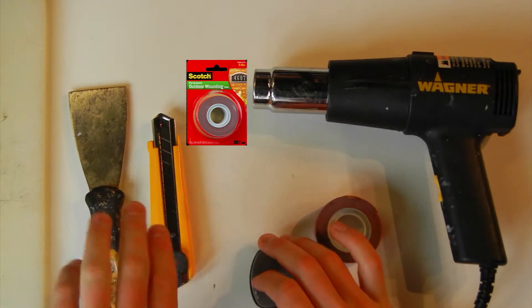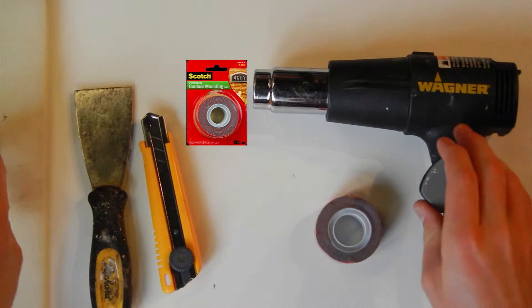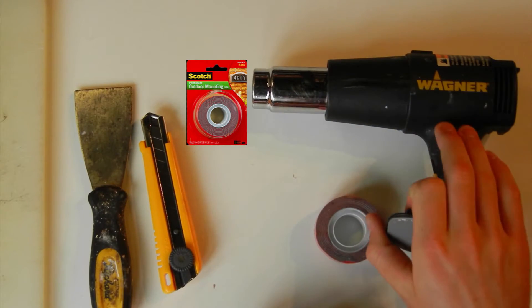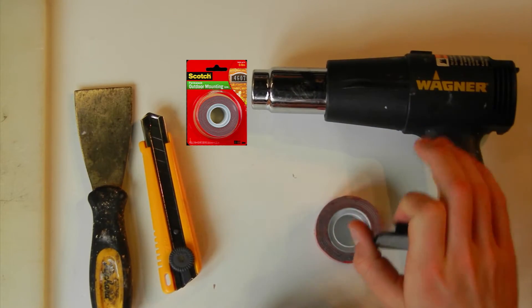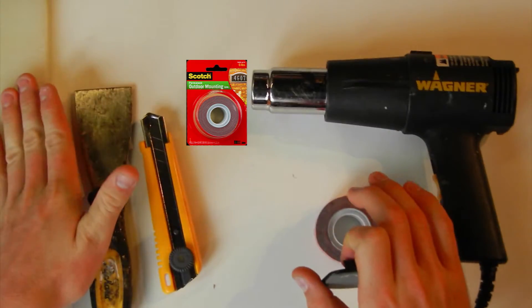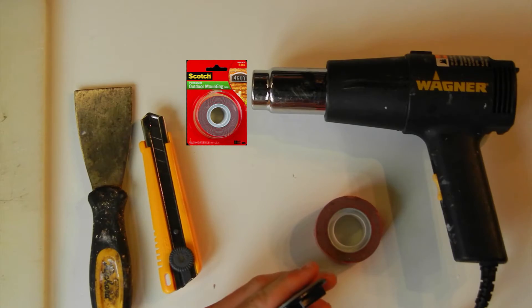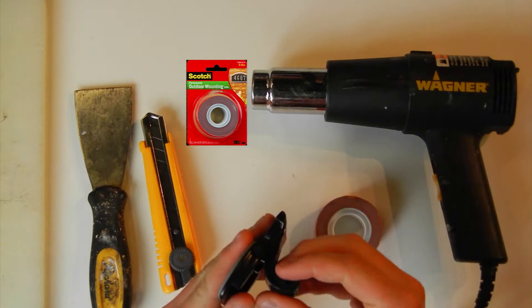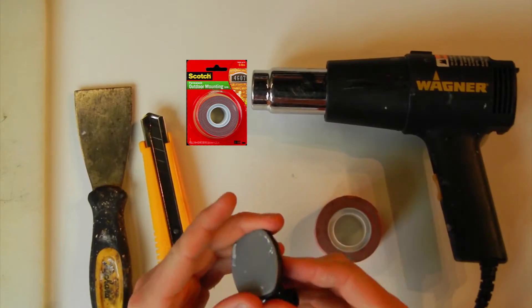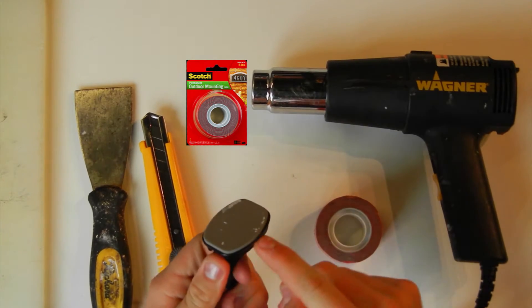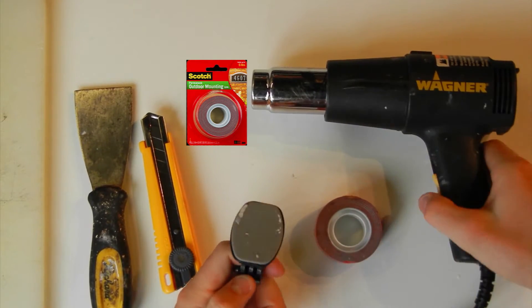The tools I've got today: an X-Acto knife, a scraper, a heat gun. If you don't have a heat gun, a hot hair dryer will work quite well. It'll just take a little bit longer. And a cutting board for when I trim the tape at the very end. The other thing I'm going to need, I'm using the J-buckle mount just as something to slide into the flat adhesive mount to stop from burning myself when I warm it up.